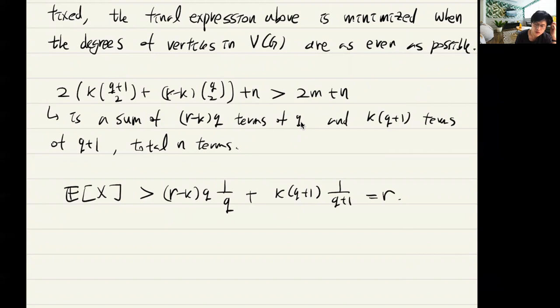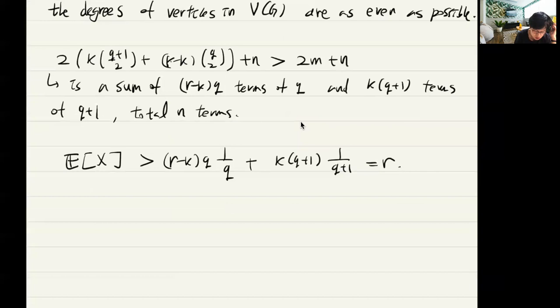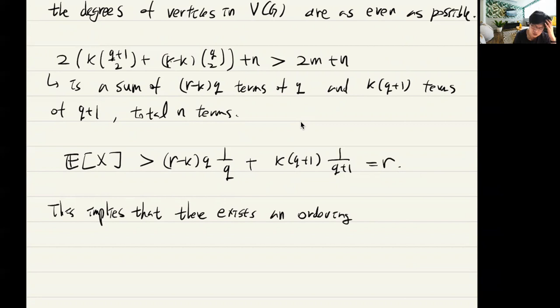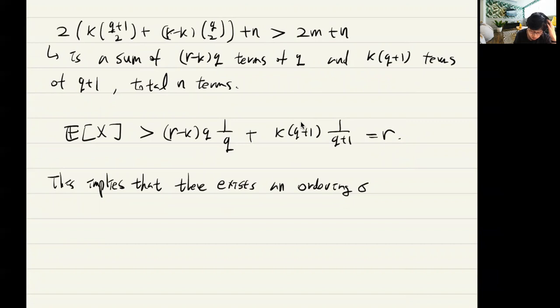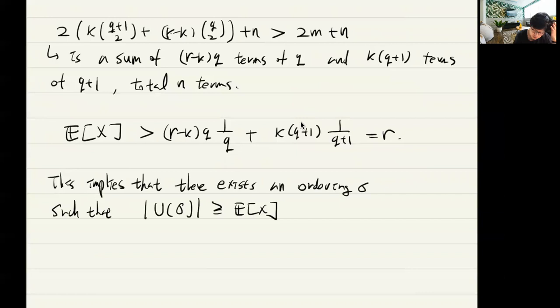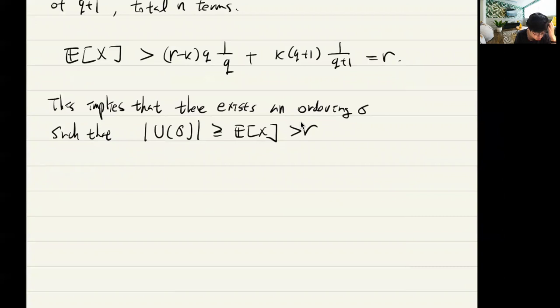We showed that the expectation of X is strictly bigger than r. This implies there exists an ordering such that U(σ) has size strictly bigger than r. Since this is an integer and strictly greater than r, it must be at least r+1, meaning G contains an independent set of size at least r+1.